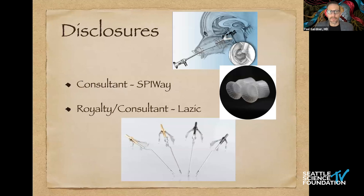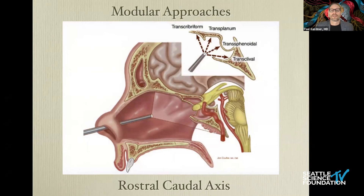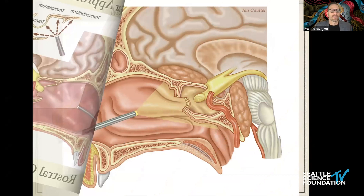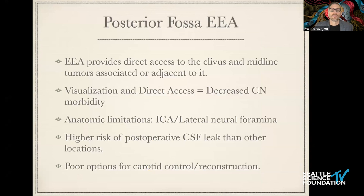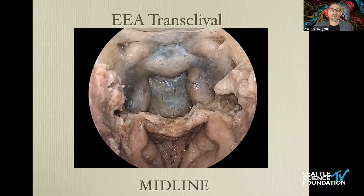We talked before about the anterior module of approaches, and here we're going to be talking about lower down in the rostrocaudal axis. The endoscopic endonasal approach to the clivus is really very direct, and perhaps it's the most direct approach. It can virtually all be done with a zero-degree endoscope, and these are some of the advantages and limitations I'll discuss in a moment.